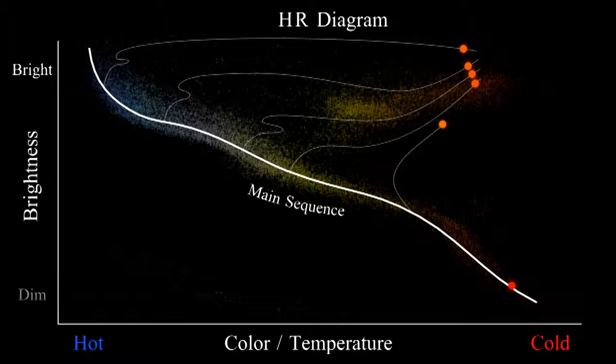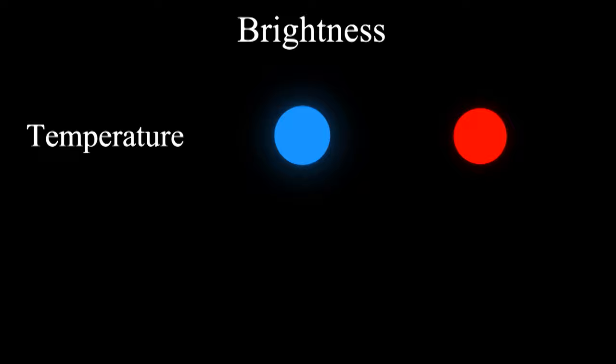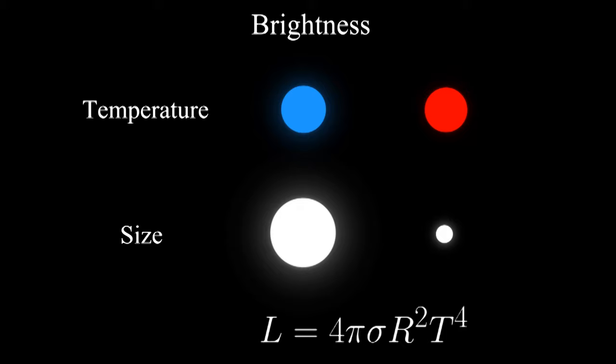We've seen that the brightness of a star depends on its temperature, but it also depends on its size. A star will produce more light if you raise its temperature or increase its size. And you can calculate the radius of a star by taking its brightness and adjusting for temperature.